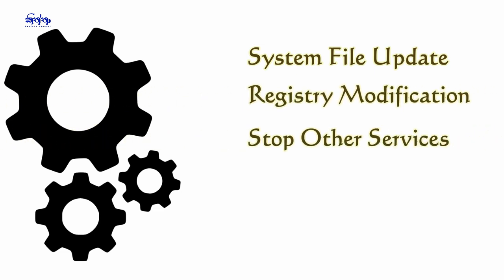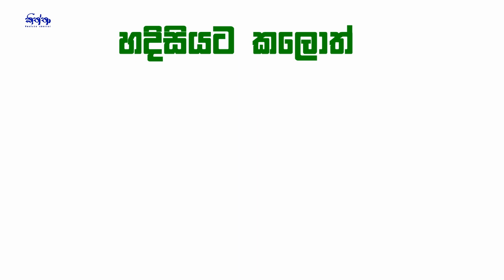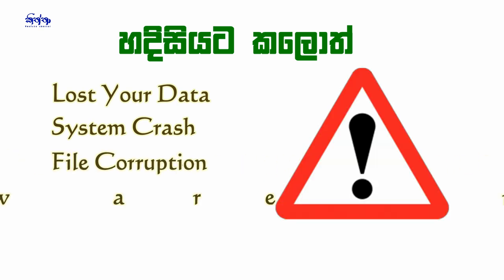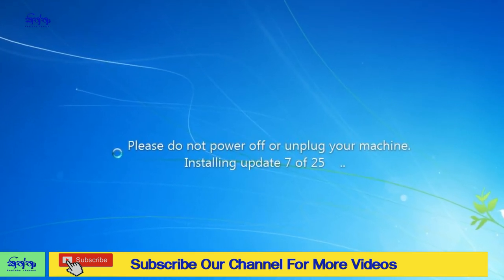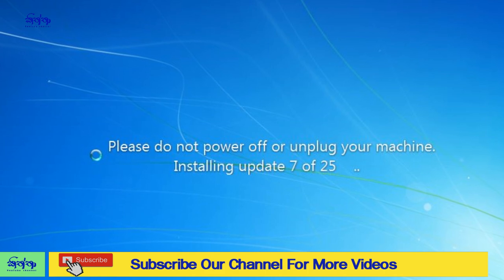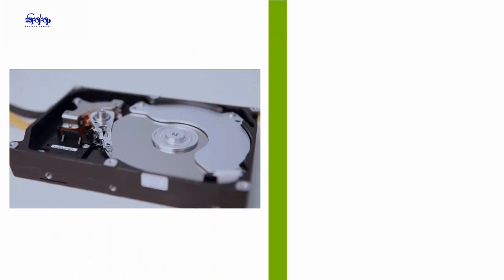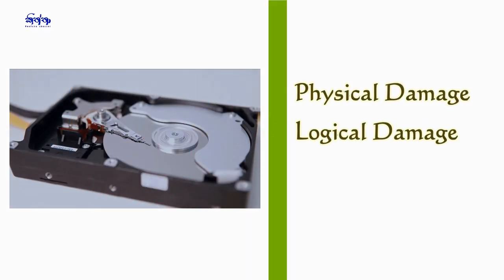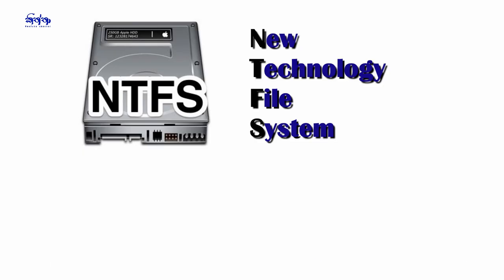This is the system file update and registry modification. This is the system shutdown. The system file update is performed. System crash and file corruption is not available to the hardware devices. The system update is not available to the computer.